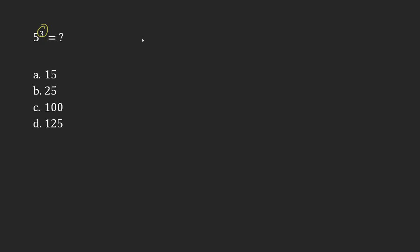That 3 just means how many times you're going to multiply the number that comes before it by itself. So 5 is being multiplied 3 times here, 5 times 5 times 5.